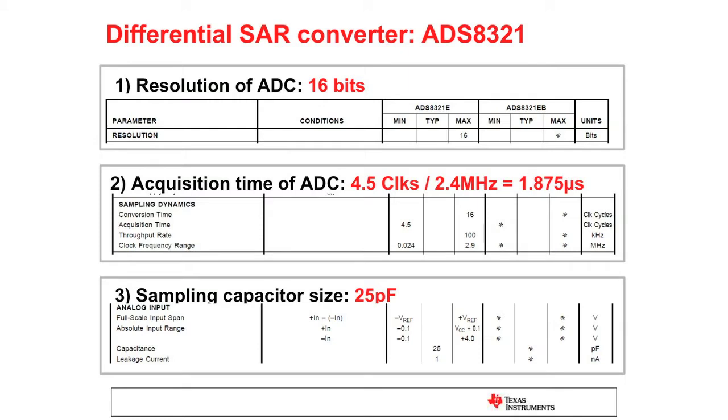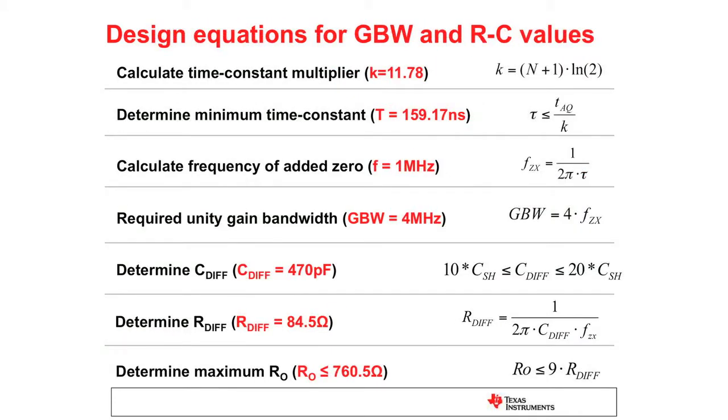After you obtain those values from the datasheet, you can put those in the design equations to get your preferred unity gain bandwidth needed from your fully differential amplifier, the maximum output referred to impedance for that amplifier,